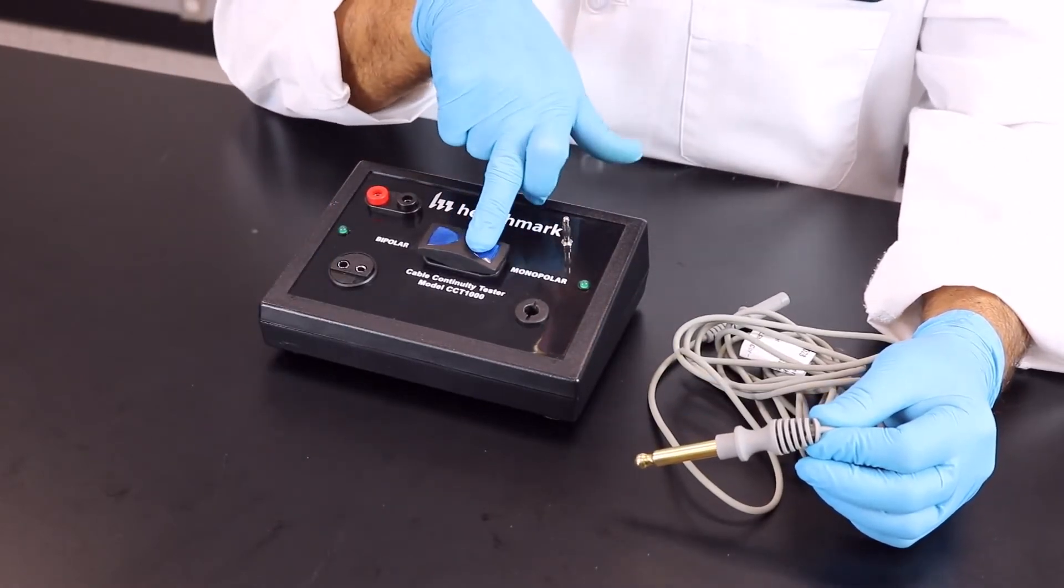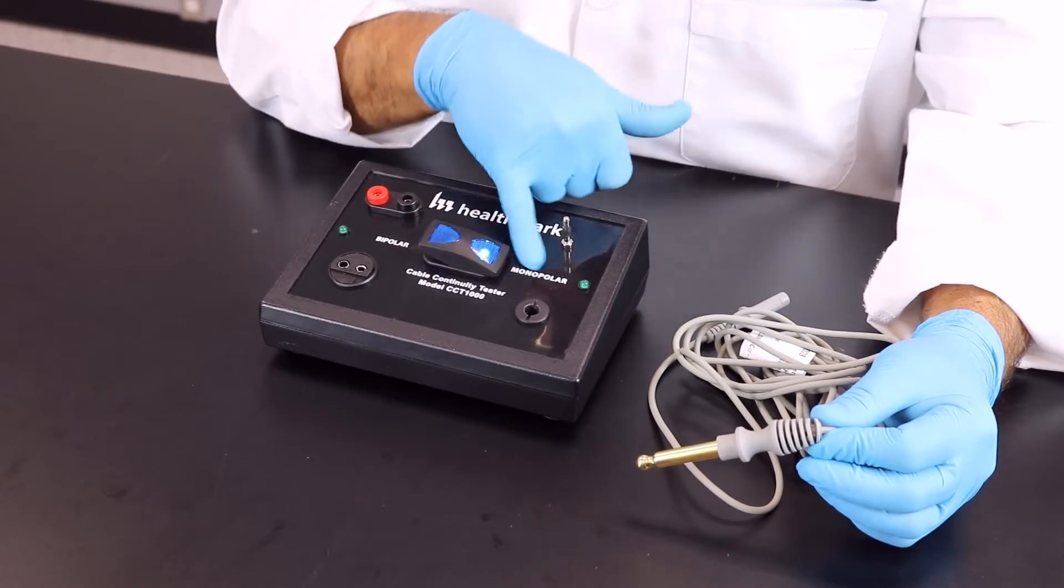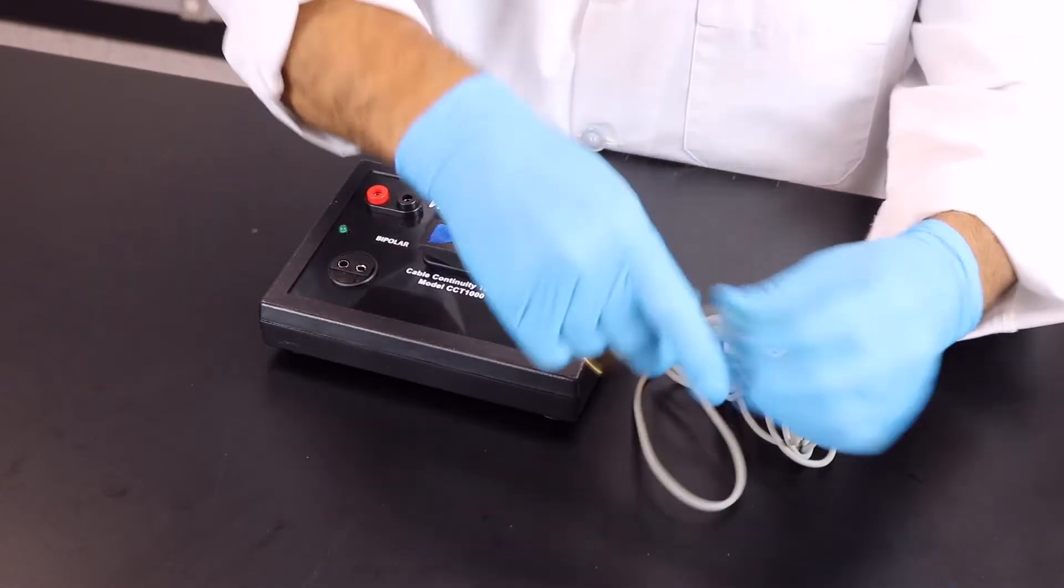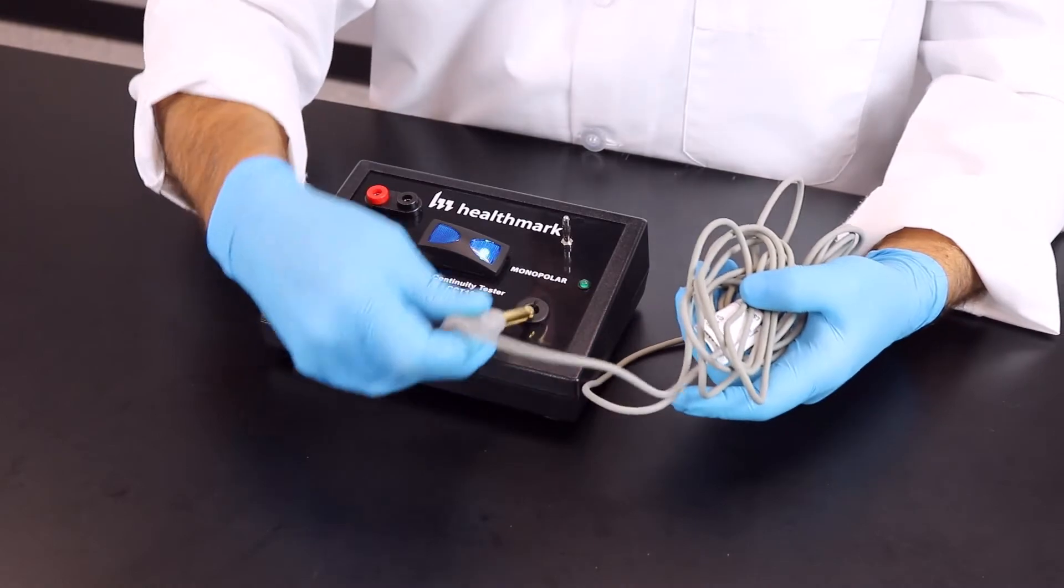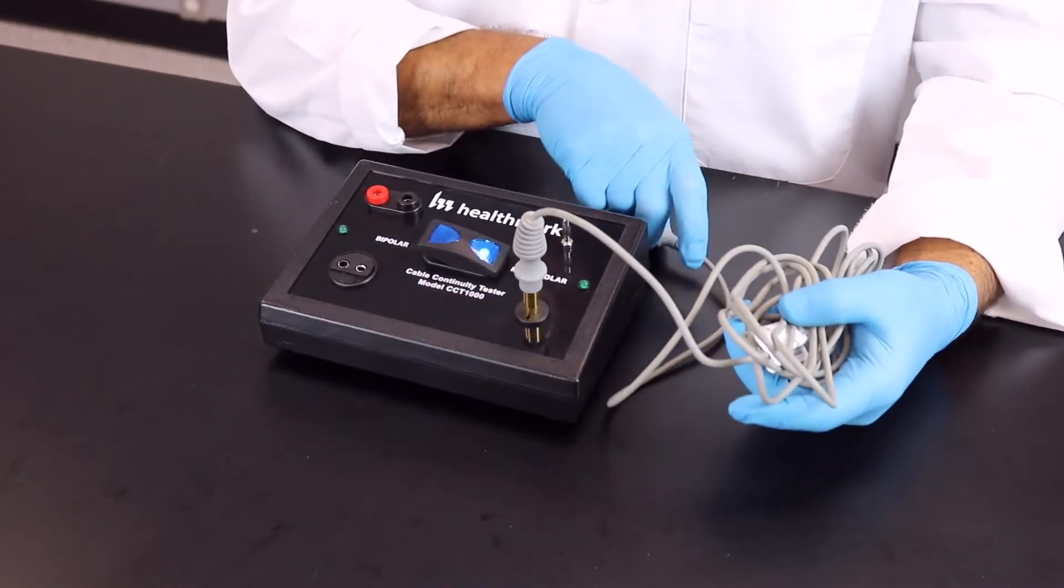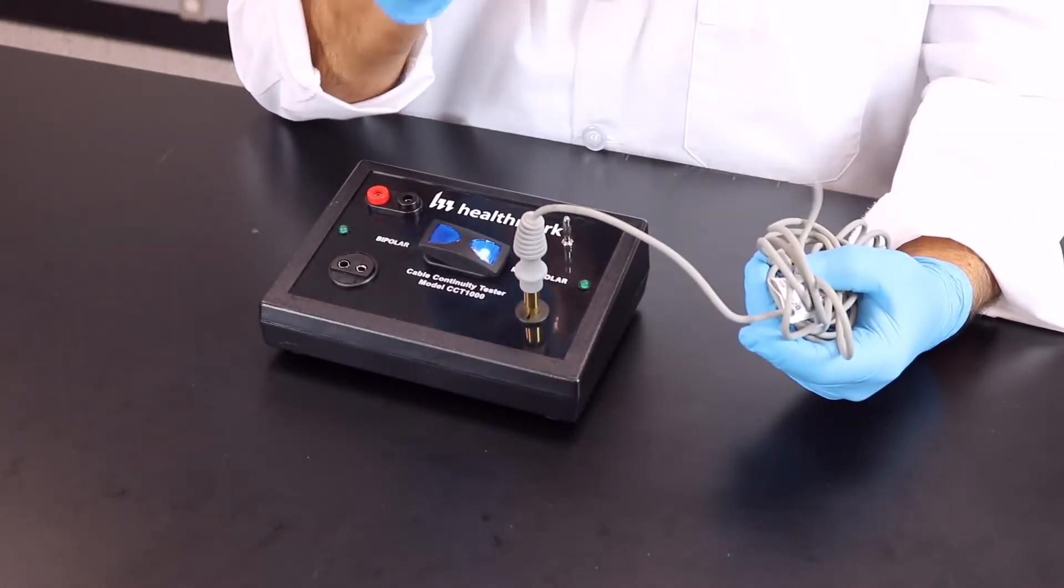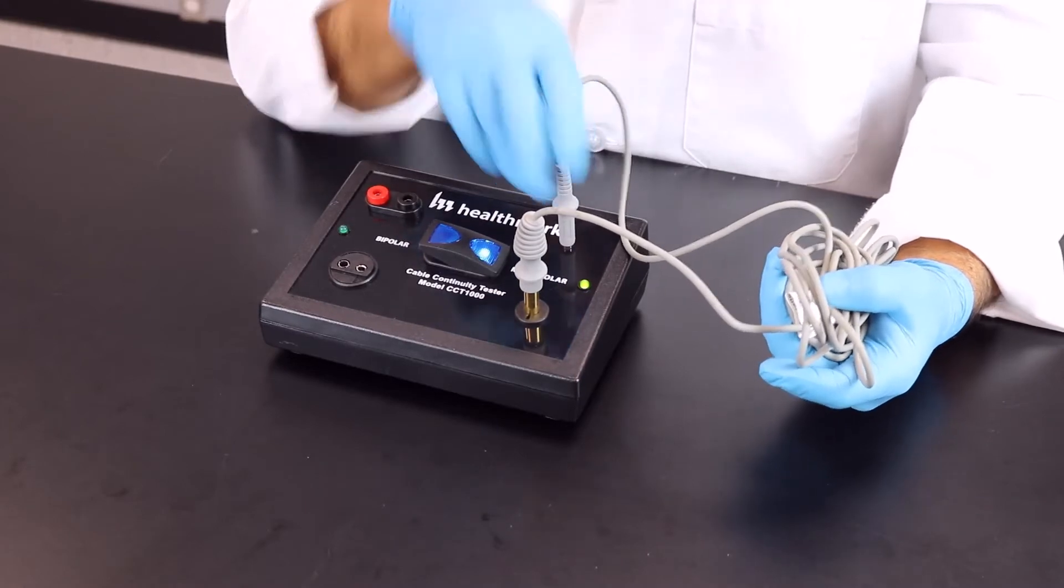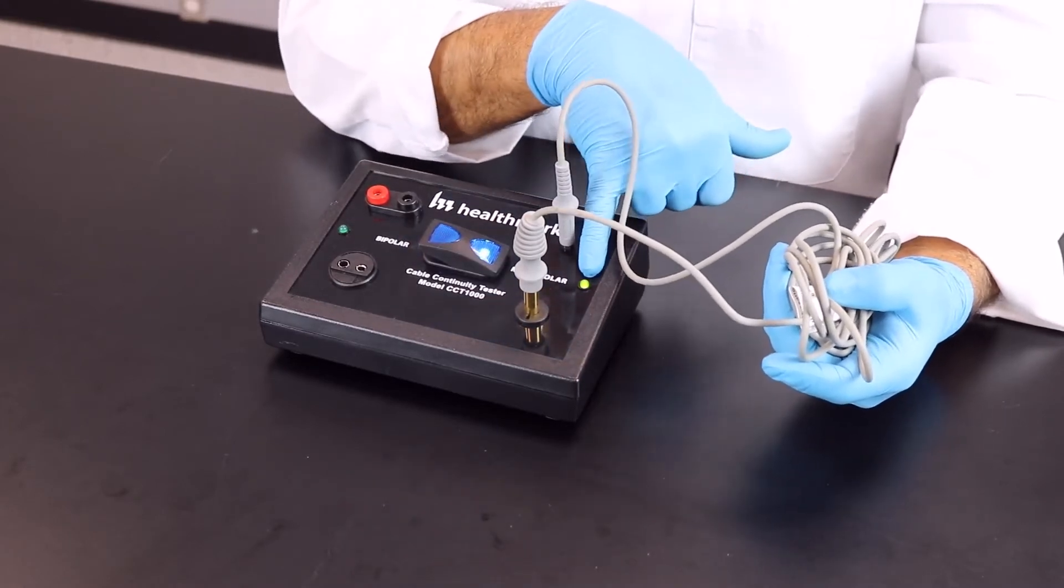You're going to take your toggle switch and turn it on towards the word monopolar. You're going to take the proximal end of the cable, put it into the port at the bottom, your distal end of the cable into the post on top. Automatically, you're going to see the light go on.